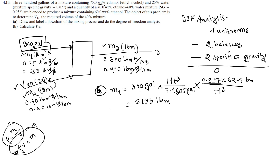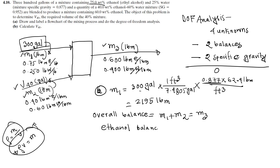So from the calculation, M1 equals 195 pounds. Now doing the overall balance: M1 plus M2 equals M3. Then we do the ethanol balance: 0.750 × M1 plus 0.400 × M2 equals 0.600 × M3.